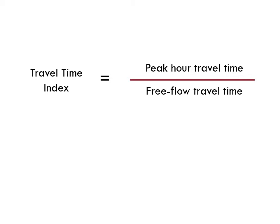For example, if it takes 25 minutes to travel somewhere during the peak period but just 20 minutes during the off-peak when traffic is free flowing, the TTI would be 1.25, which is 25 divided by 20.